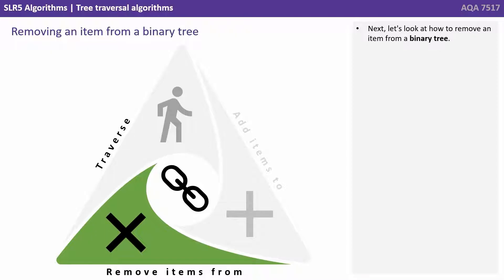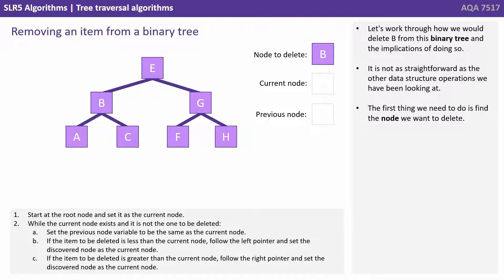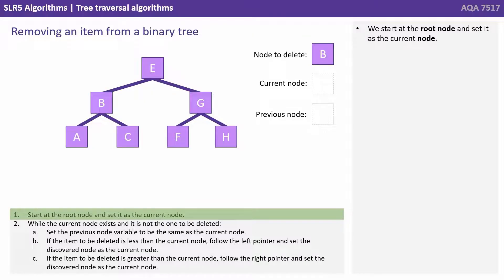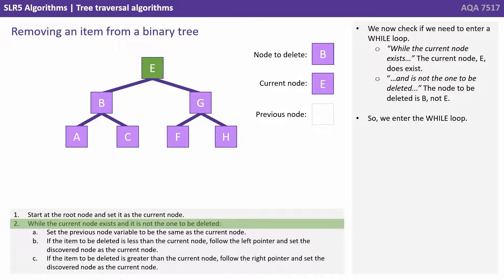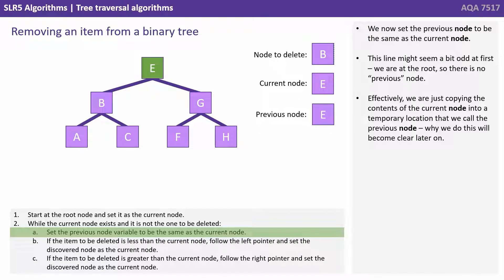Next let's look at how to remove an item from a binary tree. Let's work through how we would delete B from this binary tree and the implications of doing so. It's not as straightforward as the other data structure operations we've been looking at. The first thing we need to do is find the node we want to delete. We start at the root node and set it as the current node. We now check if we need to enter a while loop. While the current node exists, the current node E is not the one to be deleted, so we enter the while loop. We now set the previous node to the same as the current node. We are at the root node so there is no previous node — effectively we're just copying the contents of the current node into a temporary location called the previous node.